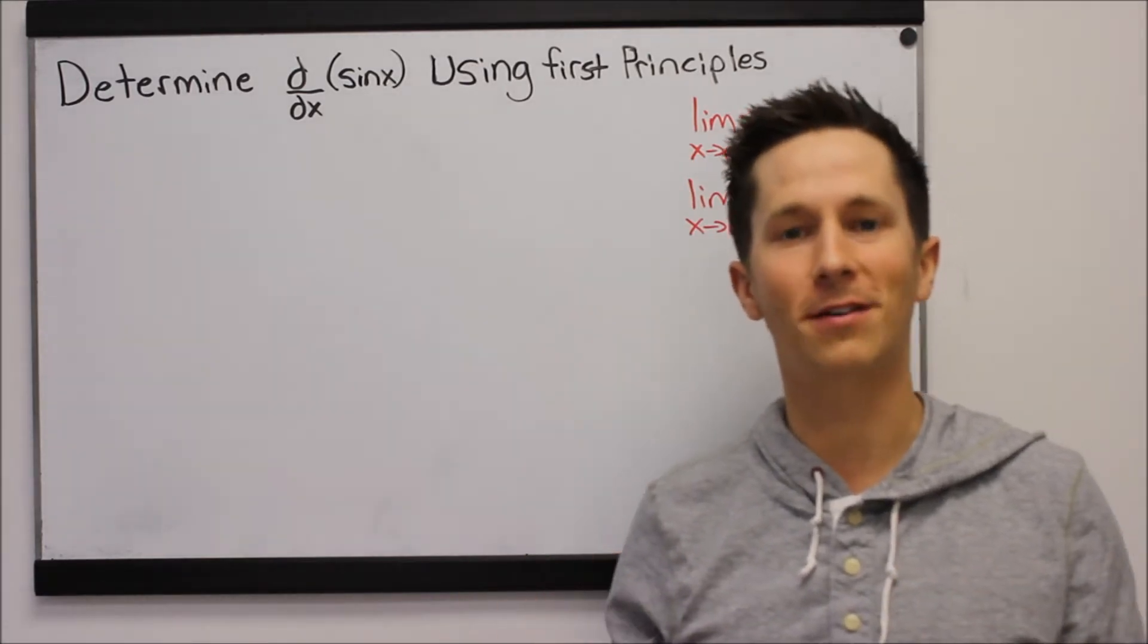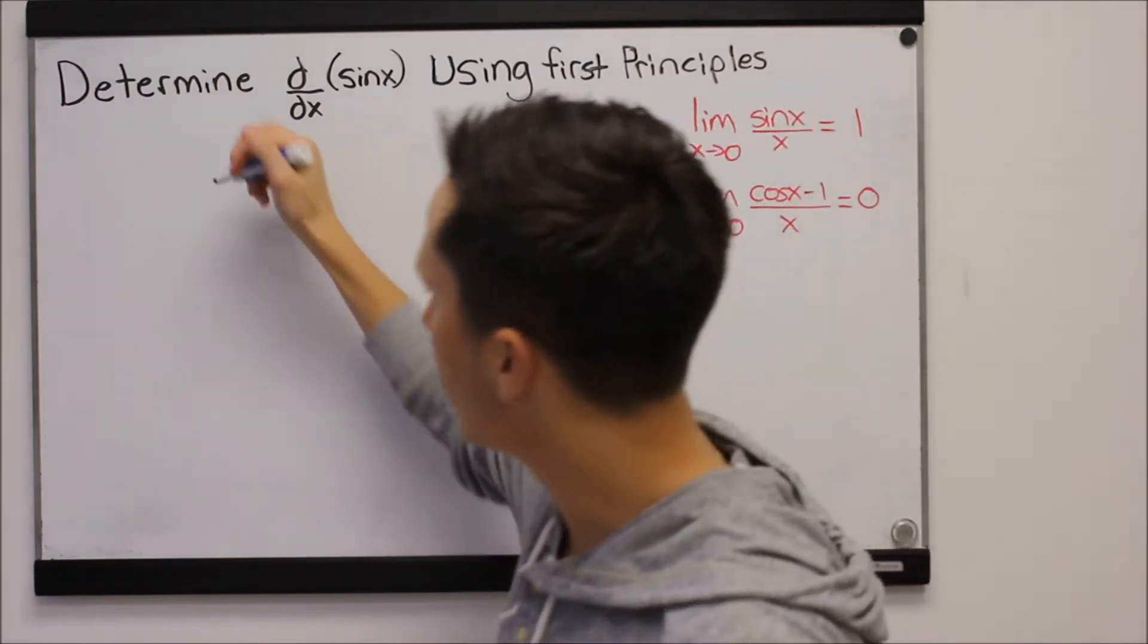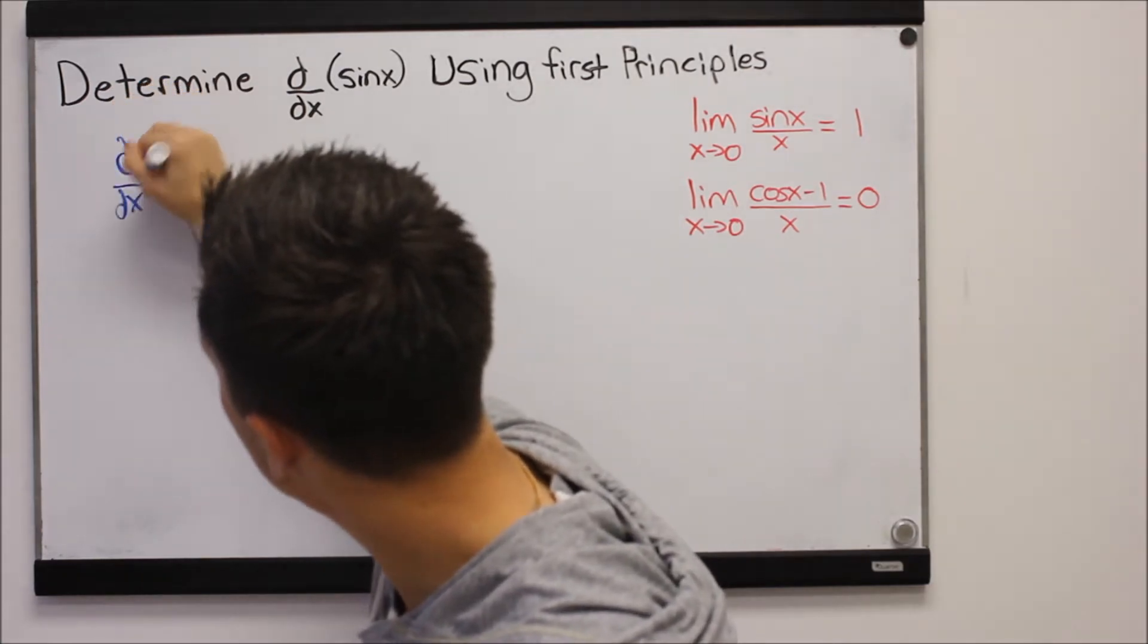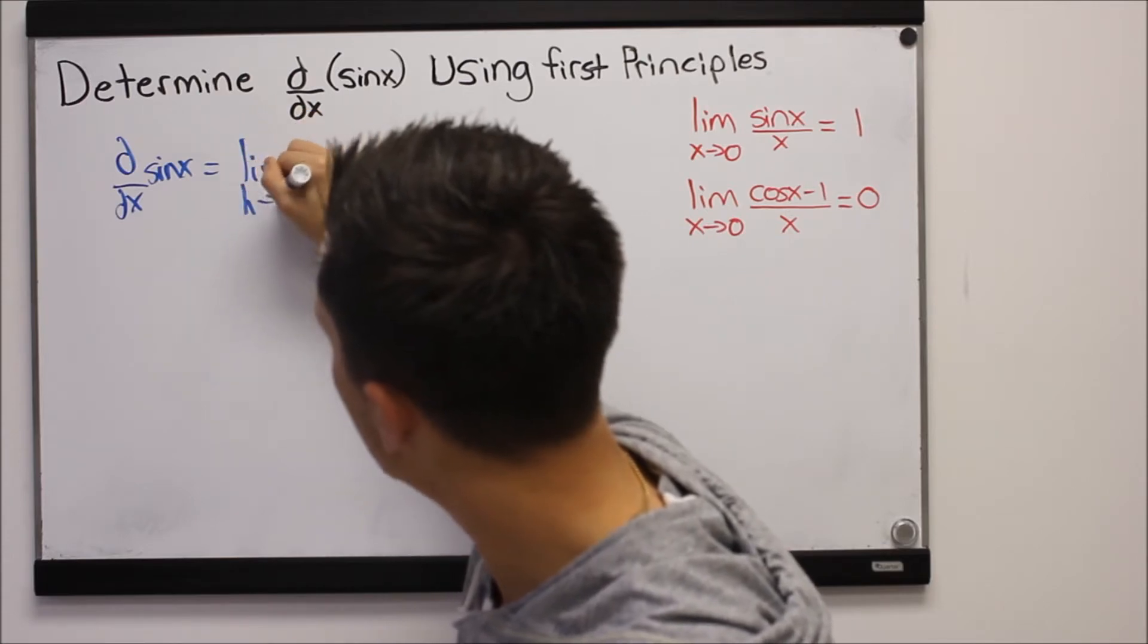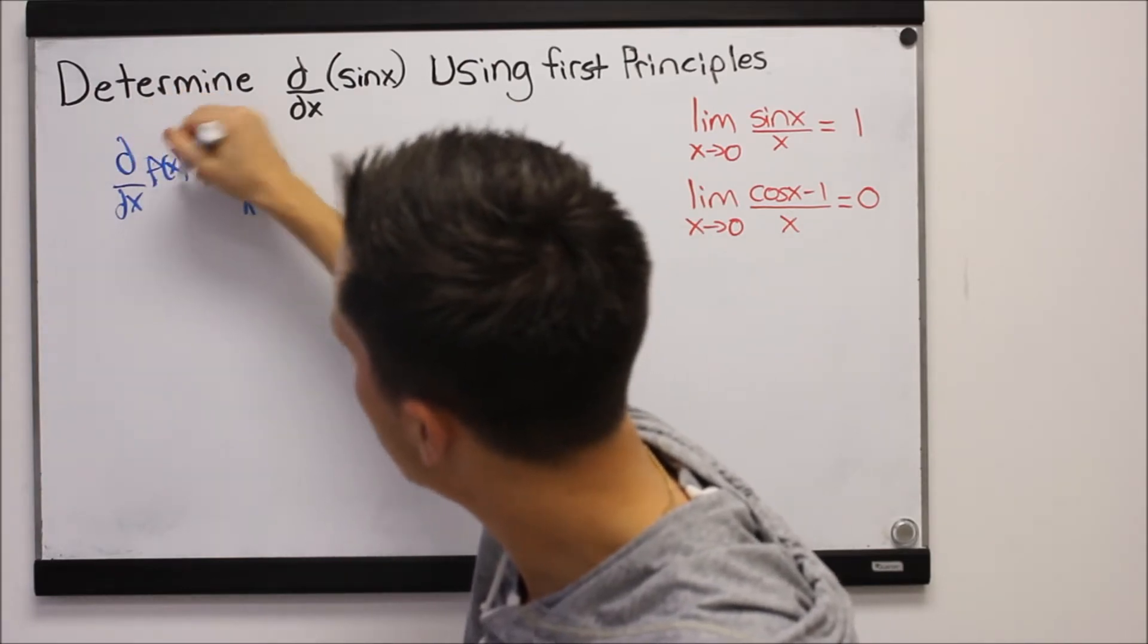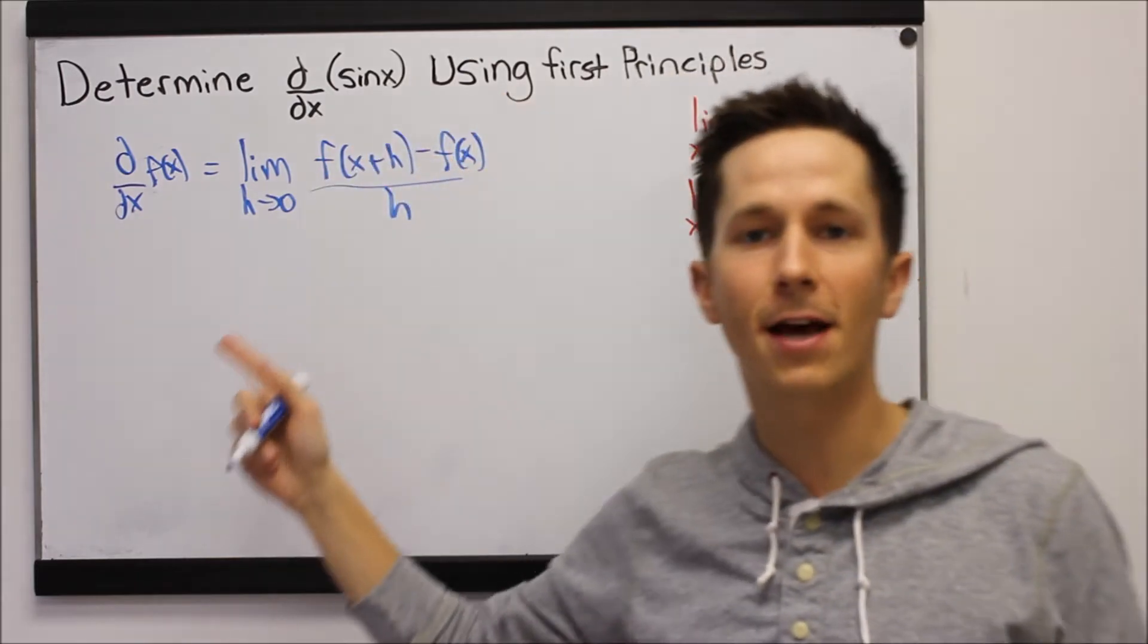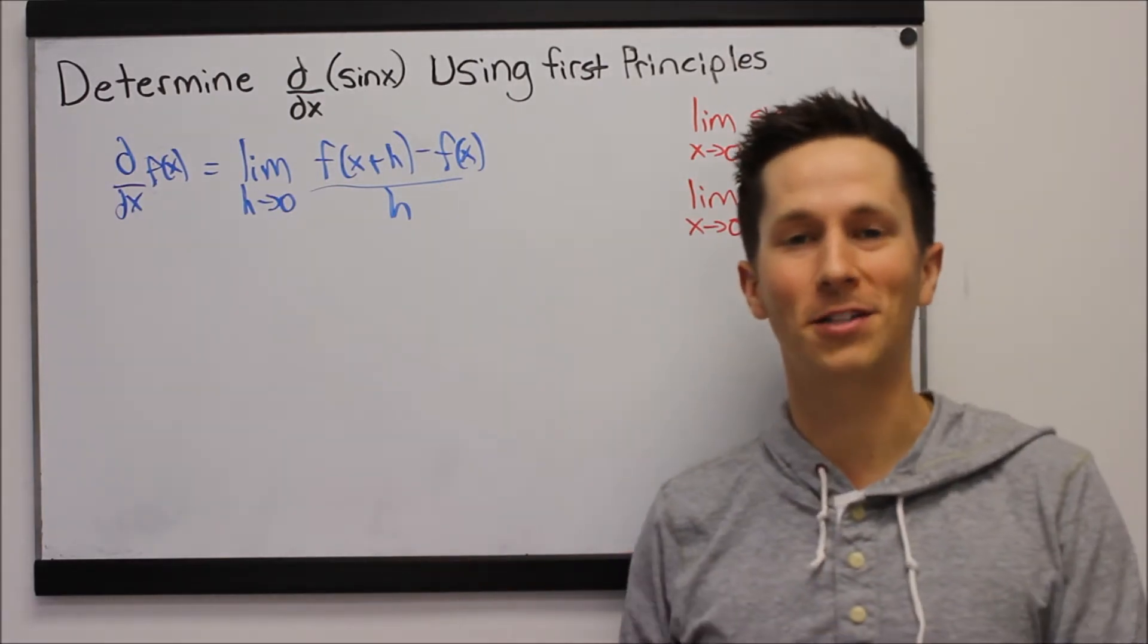First principles is another fancy way of saying using the definition of the derivative. So as soon as we see that we want to write down the definition. So I'm going to write d/dx of sine x equals the limit as h goes to zero of f(x+h) minus f(x) all over h. That is the definition of the first derivative and if we don't have that burned into our brains already we should.